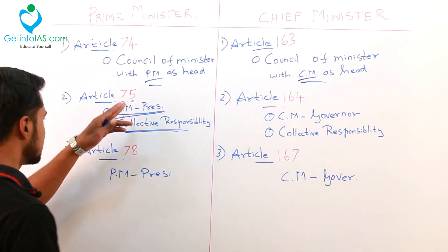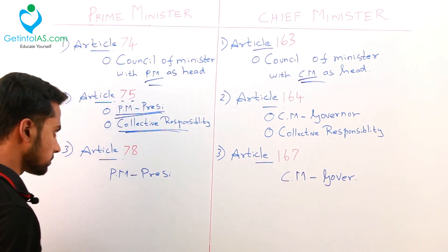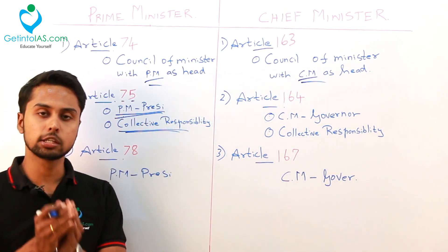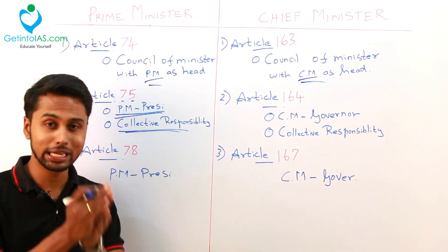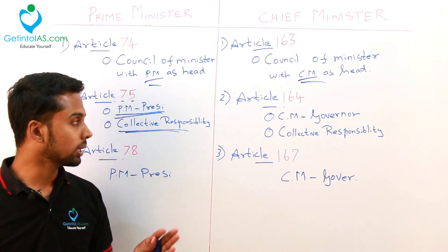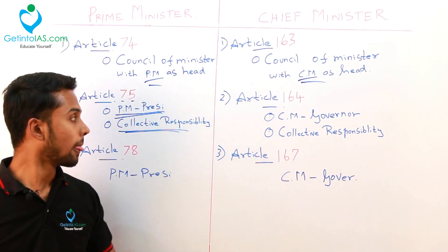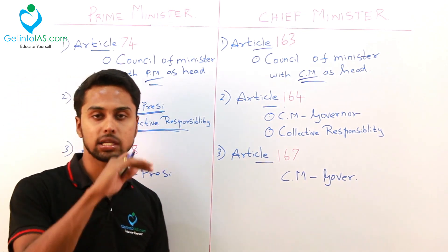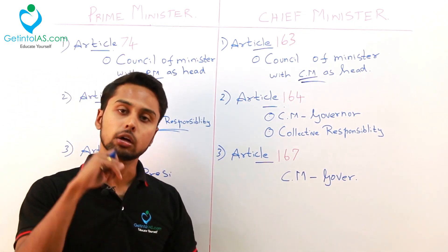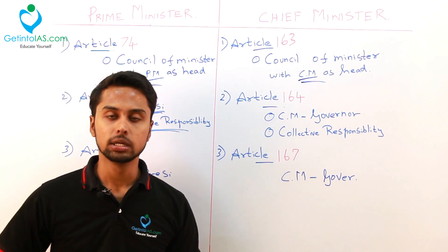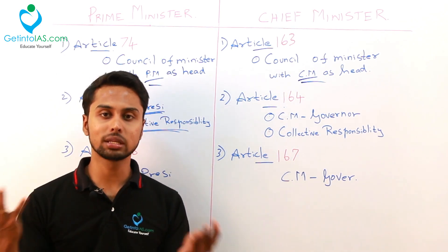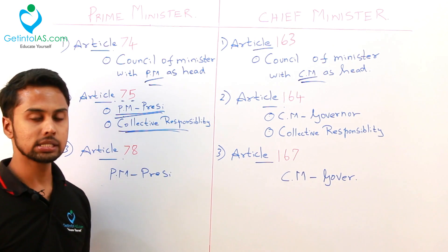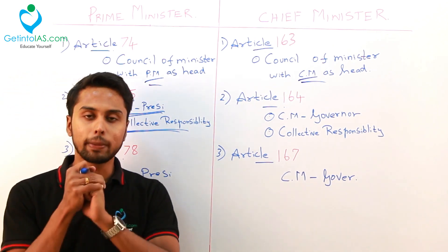Another important thing in article 75 is collective responsibility. The council of ministers is collectively responsible to the parliament. These council of ministers are at the higher level of executive and are also present in the parliament, so the legislator and executive are the same. Collective responsibility means they are collectively responsible to the parliament, and many devices exist for parliament to check this.